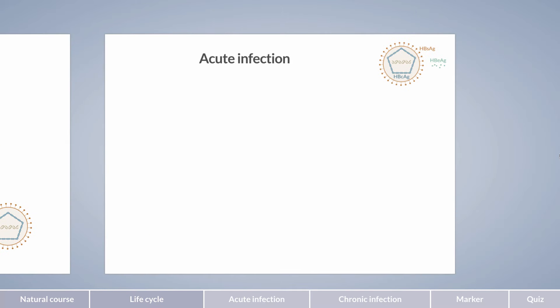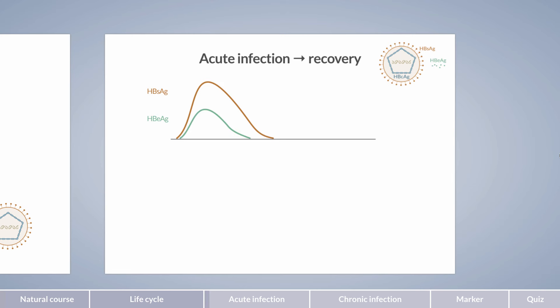In the following section, we will discuss the course of acute hepatitis B infection, which leads to subsequent recovery. After infection with hepatitis B virus, HBs antigen and HBe antigen are initially detectable in serum. During the course of the immune response, antibodies against the three viral components are formed. These antibodies can be differentiated into anti-HBc antibody, anti-HBe antibody, and anti-HBs antibody. They have various functions and are positive in serum at different time points.